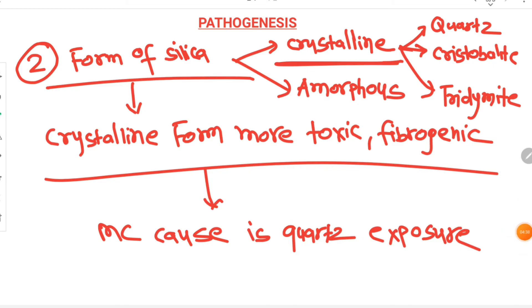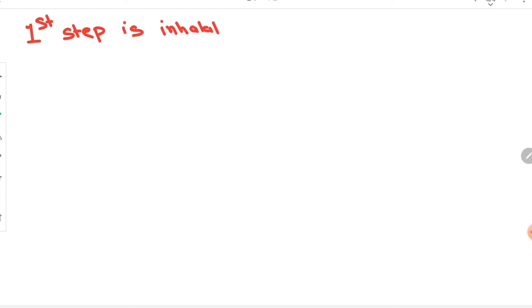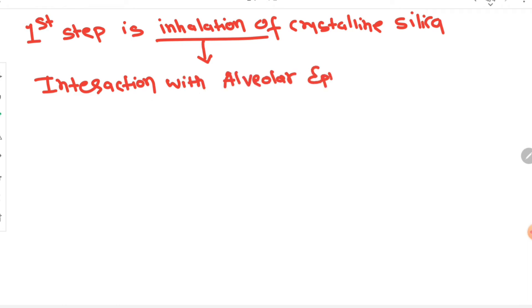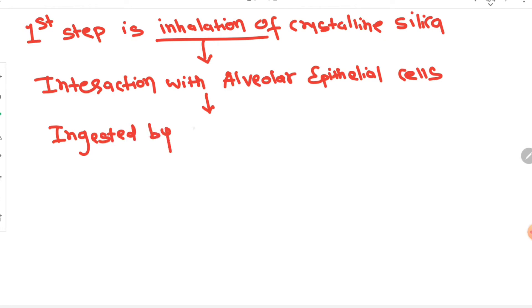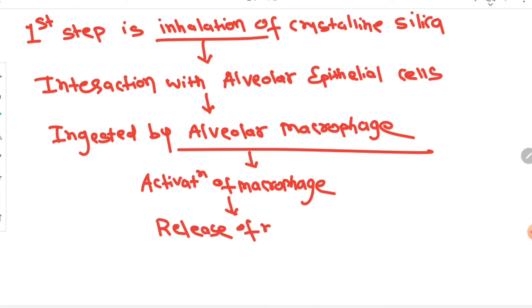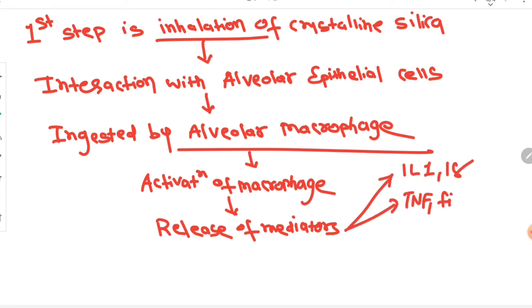Following crystalline silica inhalation, the first step is inhalation of silica particles. They reach the lung and interact with alveolar epithelial cells. The inhaled particles are then removed by alveolar macrophages, which ingest and attempt phagocytosis. Activation of macrophages leads to release of inflammatory mediators such as interleukin-1, interleukin-18, tumor necrosis factor, fibronectins, and fibroblast growth factor.